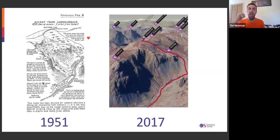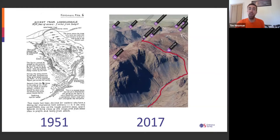One area where we find the 3D feature particularly useful — from the feedback we've had — is for people leading groups. The groups themselves might not necessarily understand the map as well as the leader, but you still want to give them a good idea of what they're letting themselves in for over the day, so there are no nasty surprises towards the end when there's a big final climb. The 3D mode is a really nice way of letting people have a preview of what they're doing without necessarily having to interpret contours on a map.